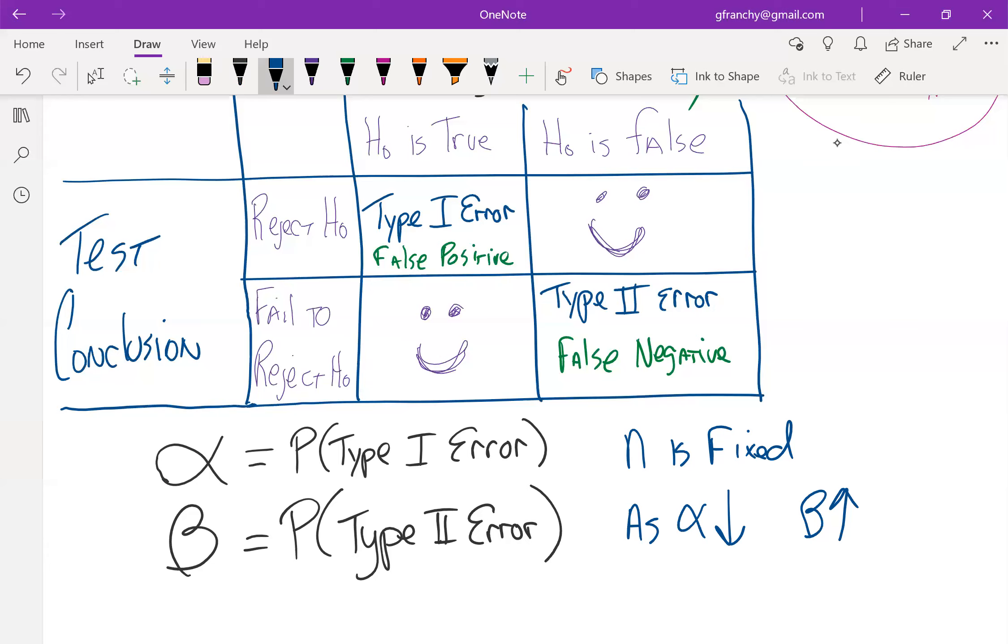There has to be some balance in between those. And one of the ways to kind of fix the issue there if these aren't where you want them to be is this is where a larger sample size can help you out. As you increase sample size, that's going to shrink down the value for beta.